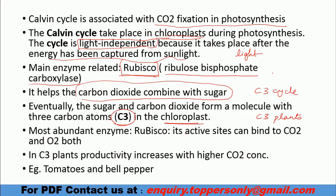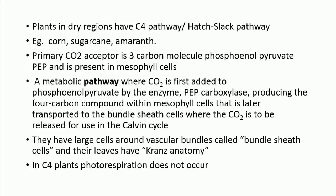C3 plants — their productivity increases with higher CO2 concentration, meaning as you provide more CO2, their productivity increases. For example, C3 plants include tomato and bell pepper. Plants in dry regions follow the C4 pathway, mostly the Hatch-Slack pathway. For example, corn, sugarcane, and amaranth. In C3 plants, the primary CO2 acceptor is Rubisco, and in C4 plants, it is Phosphoenolpyruvate (PEP).